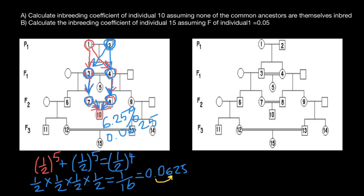Now let's move to the second question: calculate the inbreeding coefficient of individual 15, assuming F — which stands for the inbreeding coefficient — of individual one is 0.05. So we have to assume that the inbreeding of this individual is 0.05.